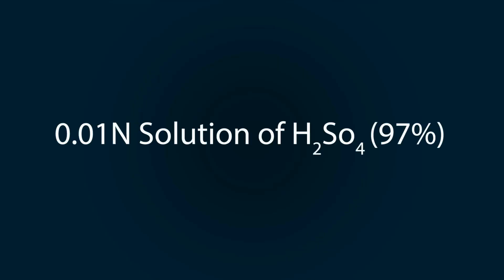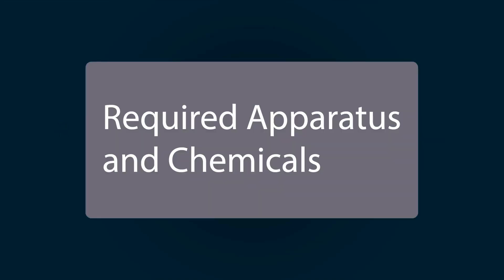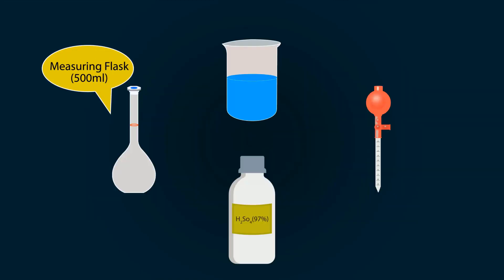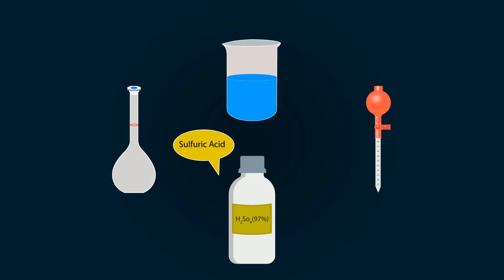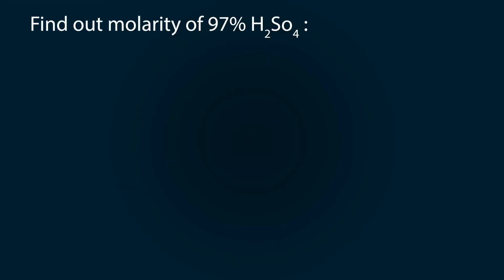In this video you will learn how to prepare 0.01 normal solution of 97% H2SO4. The chemicals and apparatus required for these procedures include a measuring flask 500ml, distilled water in a beaker, a pipette, and H2SO4.